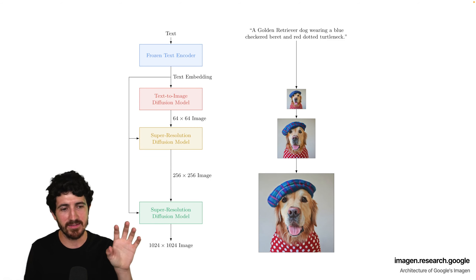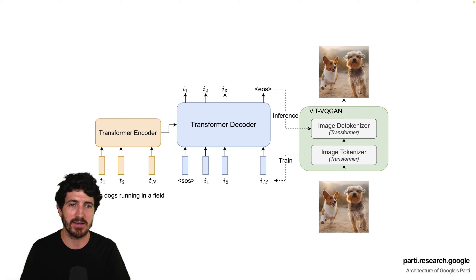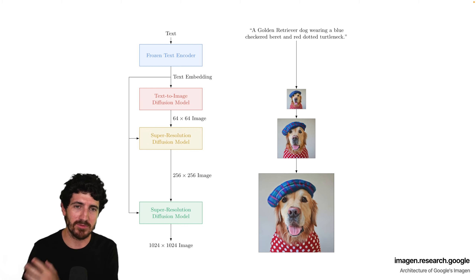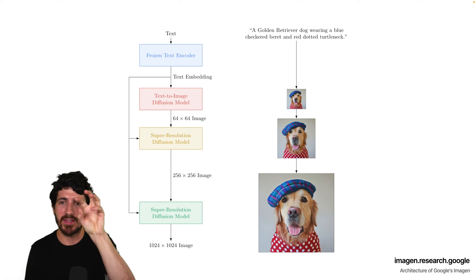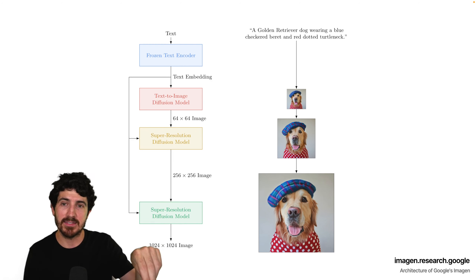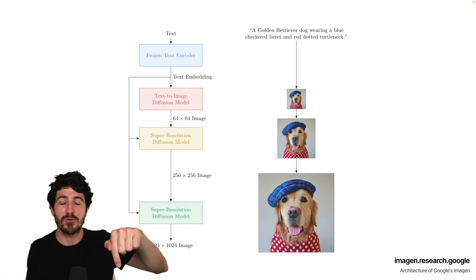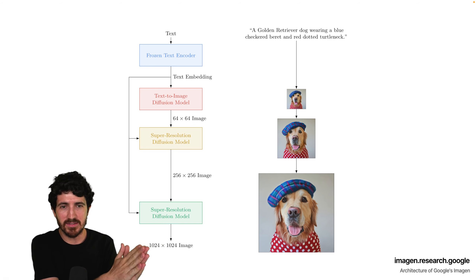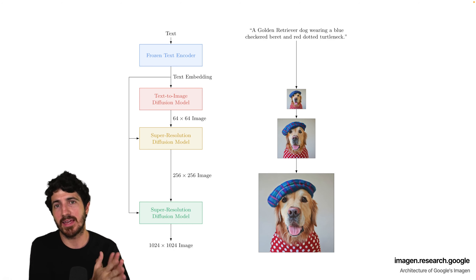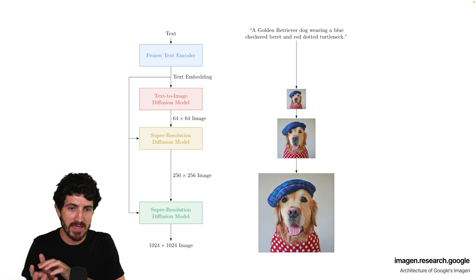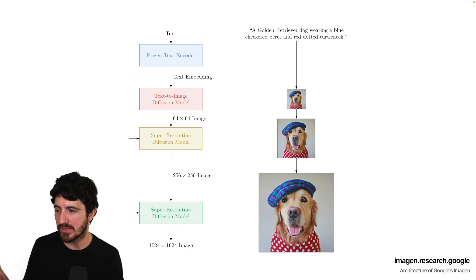What I have here is not DALL-E — this is the architecture of Imagen by Google, and also the architecture of Parti, another model from Google released recently. How Google Imagen works, which is really similar to what DALL-E does: you have a text prompt, a frozen text encoder model that produces text embeddings, then a text-to-image diffusion model that generates a 64×64 pixel image. Then two super-resolution diffusion model steps add more detail and texture, bringing the resolution up to 1024×1024 — which is also the resolution DALL-E allows you to download.